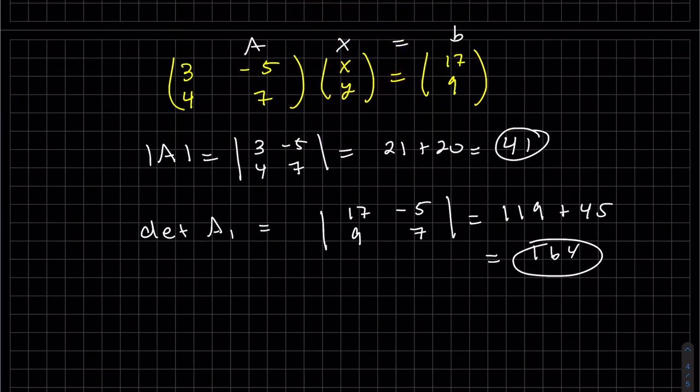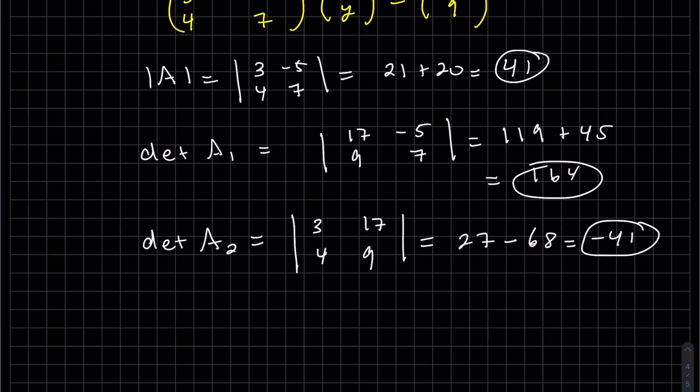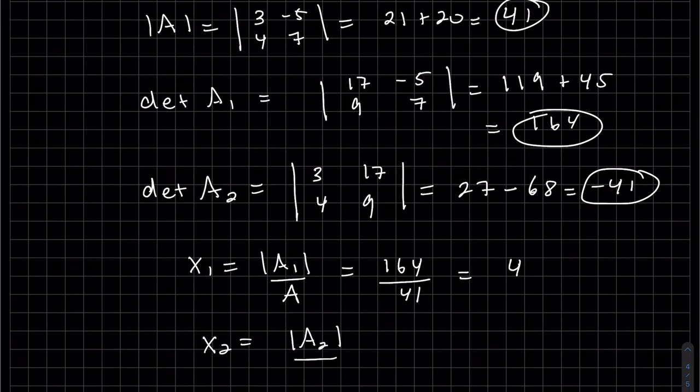And the last determinant that I need is the second one. And so this is the second A2. So we replace B in column two. So we have it. It actually divides in there evenly. And my x2 just need the determinant sign there.